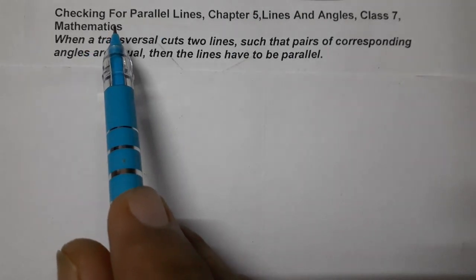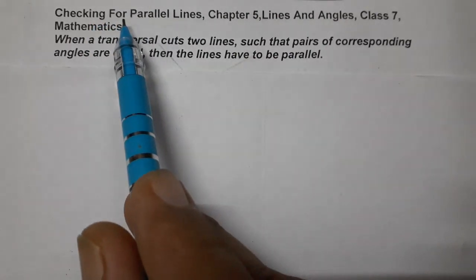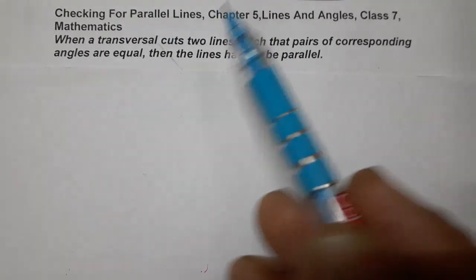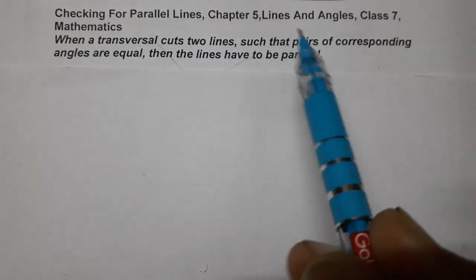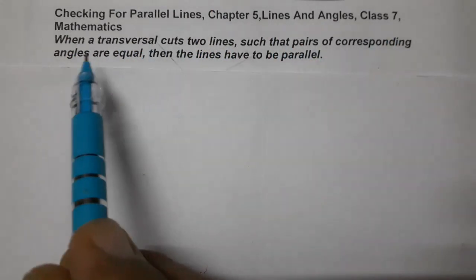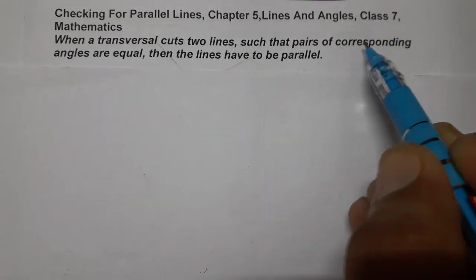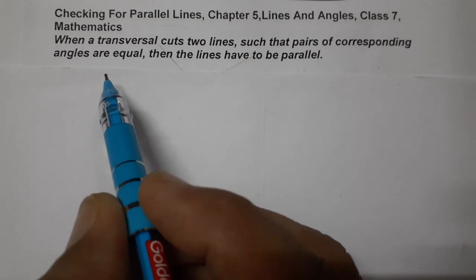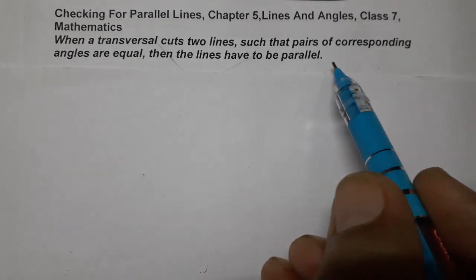In the last video we have seen transversal for parallel lines. Now we are going to check for parallel lines — whether the lines given to us are parallel or not. When a transversal cuts two lines such that a pair of corresponding angles are equal, then the lines have to be parallel. This is the first case: when any one of the four pairs of corresponding angles is equal, then the two lines are parallel.